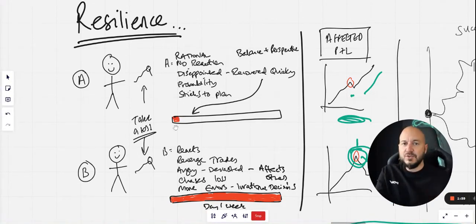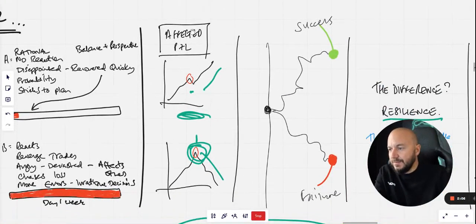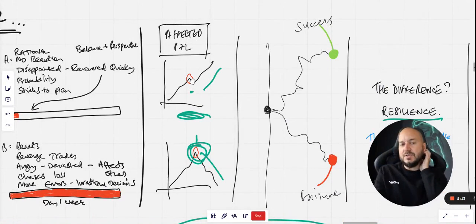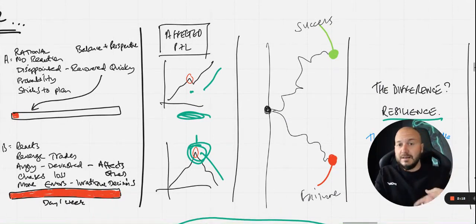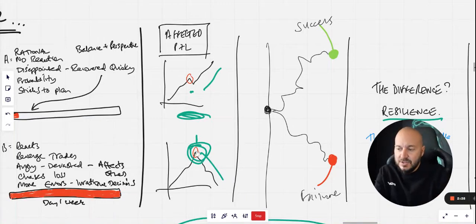Whereas this trader handles it, dusts themselves off. Yes, they're disappointed, but they move on more quickly. What then happens is their P&L, their progress is affected quite dramatically because although the same thing happened, trader A has the setback and continues along with their normal trading plan and their progress and their rational decision making.